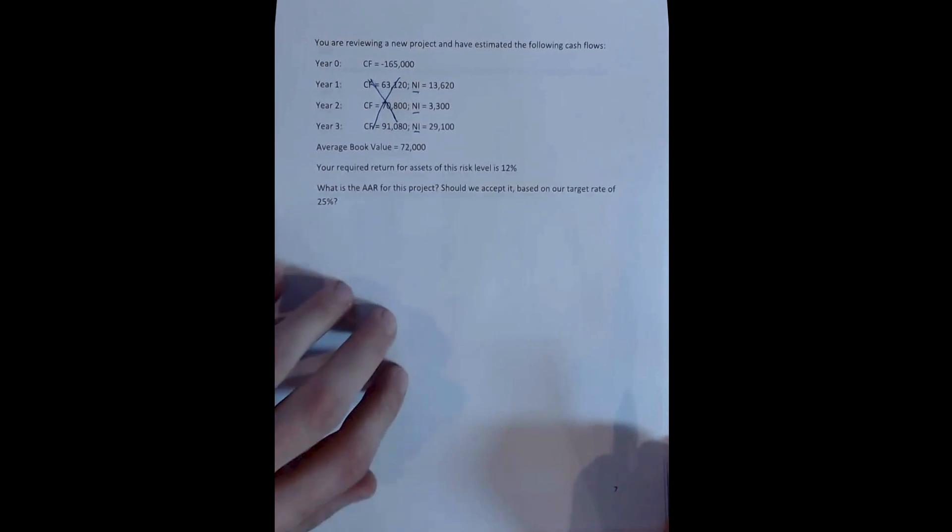So one of the important things that we need to consider when we think about the Average Accounting Return is that we're going to need all of the appropriate accounting information to calculate the problem, but it does remove us from the need of making predictions about the operating cash flows.